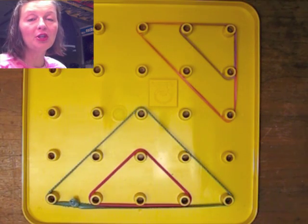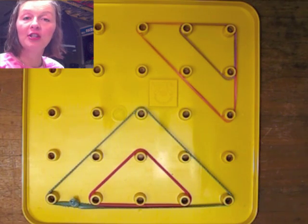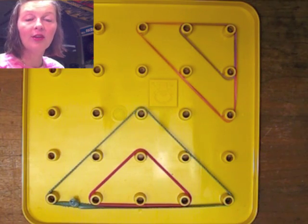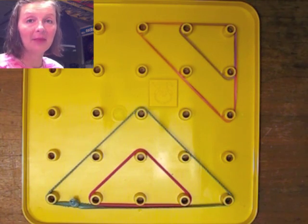Remember, similar triangles are the same shape and they potentially are different sizes, whereas congruent triangles are the same shape and required to be the same size as well.